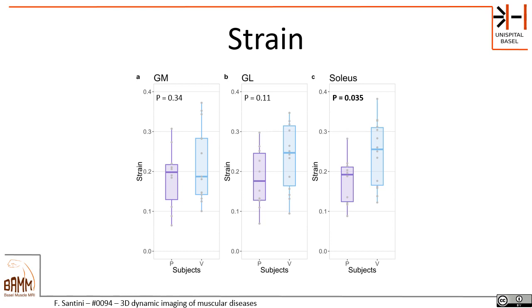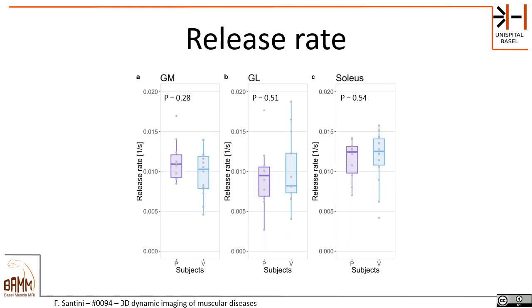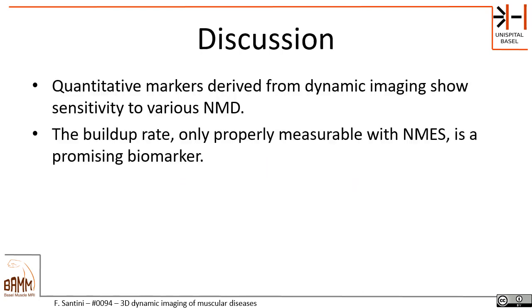By analyzing the separate ROIs, we see that the soleus is definitely the most interesting muscle, with a significant strain difference between patients and volunteers and also a very marked difference in the soleus buildup rate. Although not significant, we expect that with a higher population we would definitely have a significant separation. The release rate, on the other hand, does not show interesting differences in our considered population.